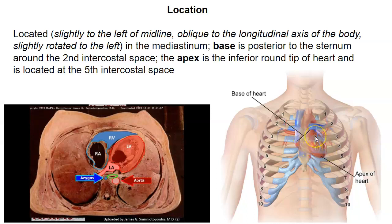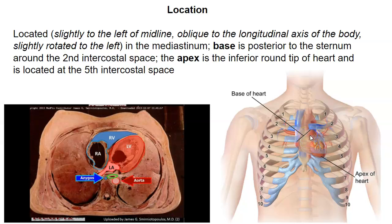The superior portion of the heart is called the base. The base is located between the second and third rib at the costal cartilages — the intercostal space. Some textbooks say it's at the third rib, but whether it's between the second and third or at the third isn't too important. The heart extends inferiorly, and the apex of the heart exists in the fifth intercostal space — that just means between the ribs at the fifth intercostal space.